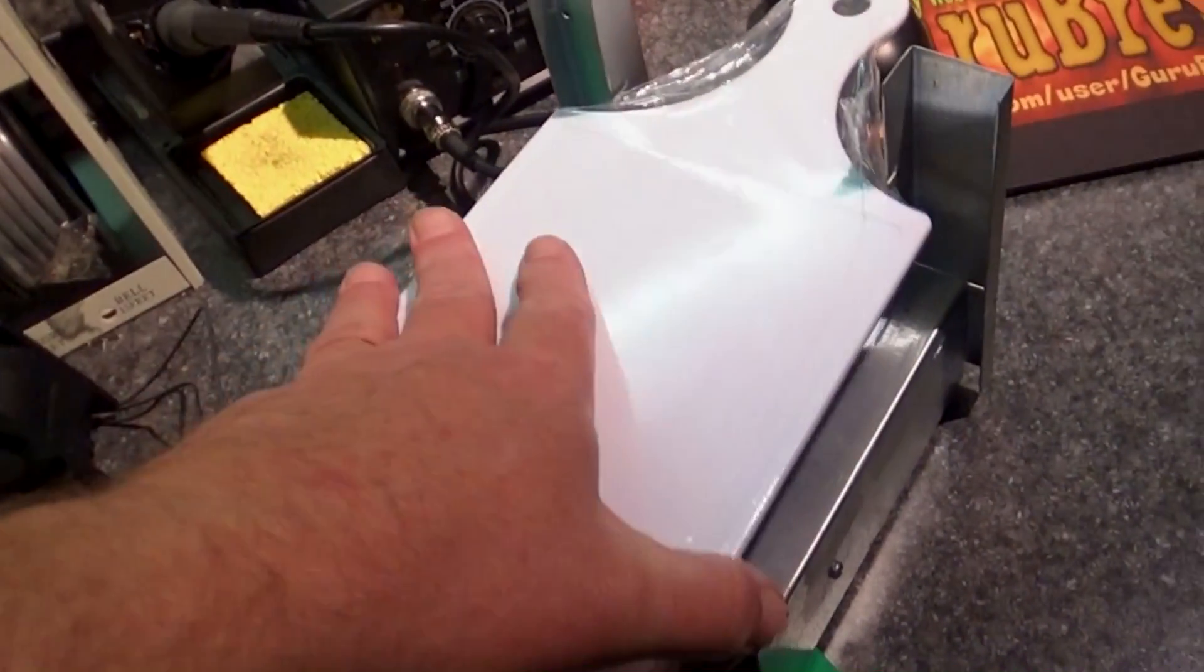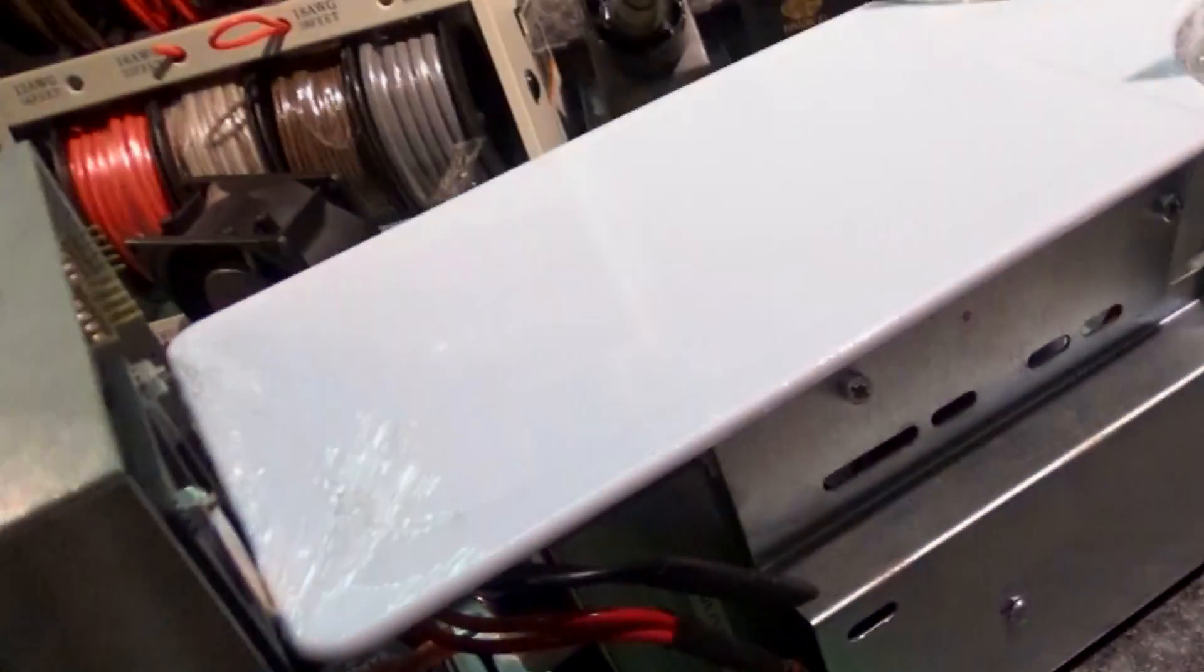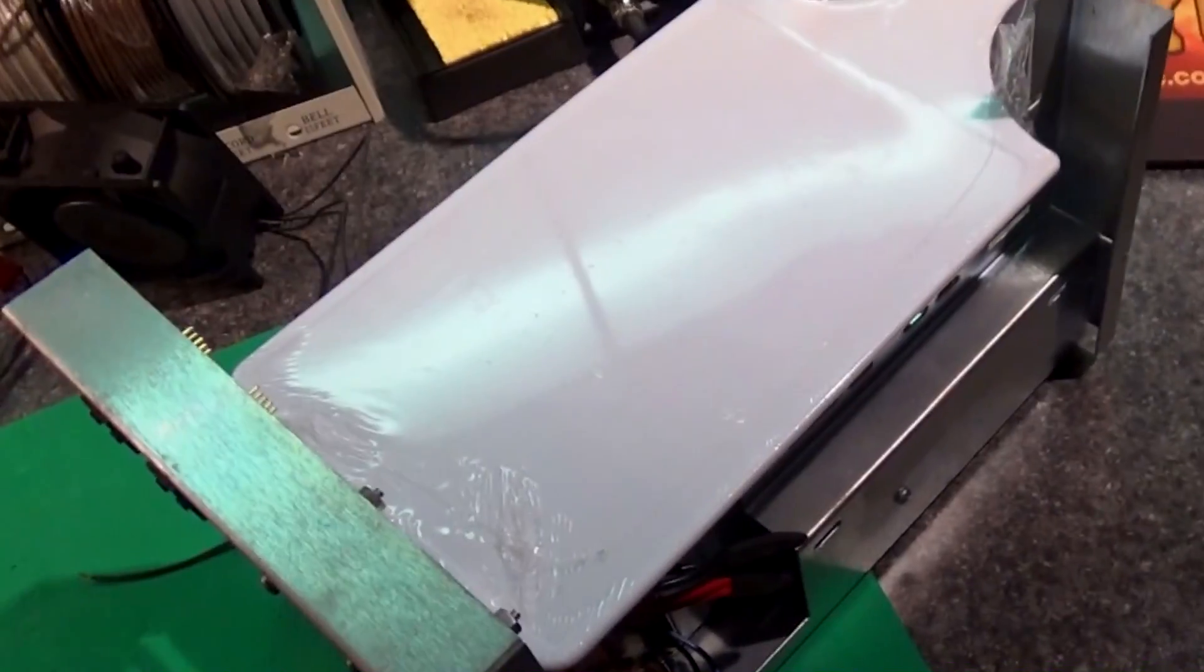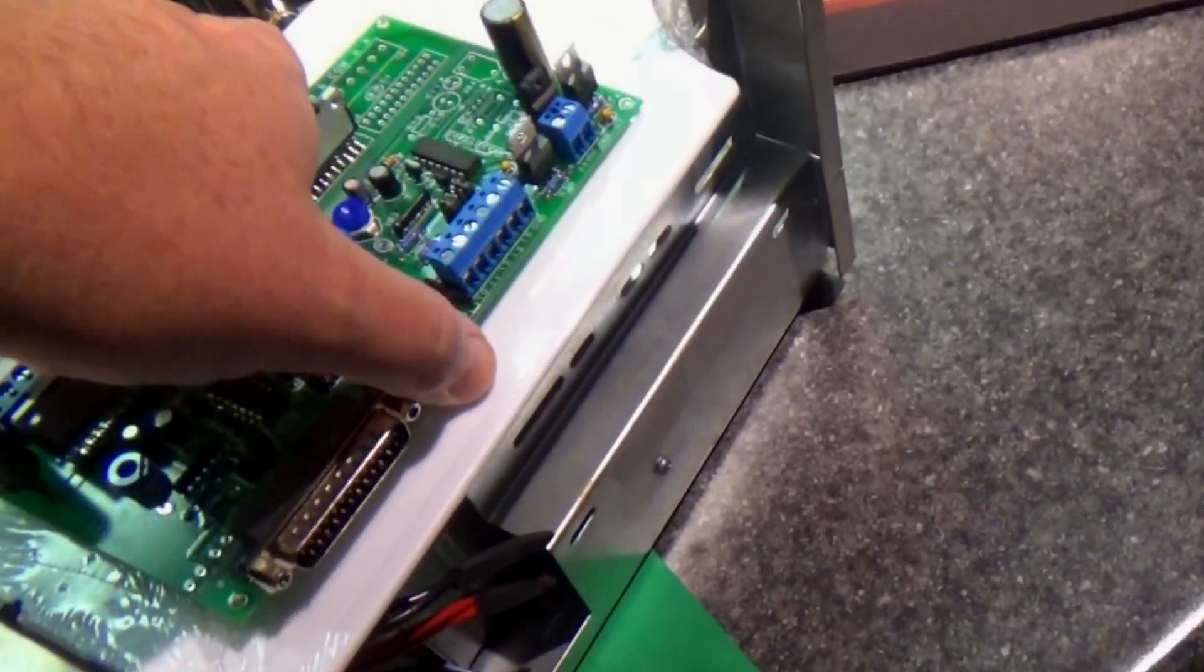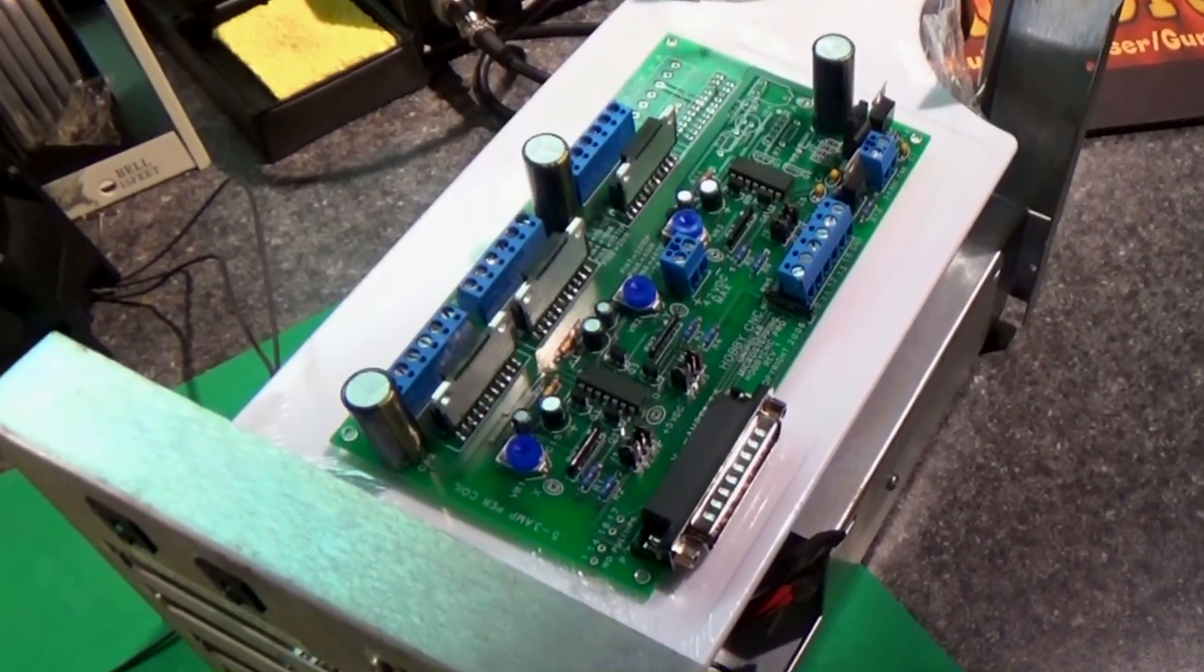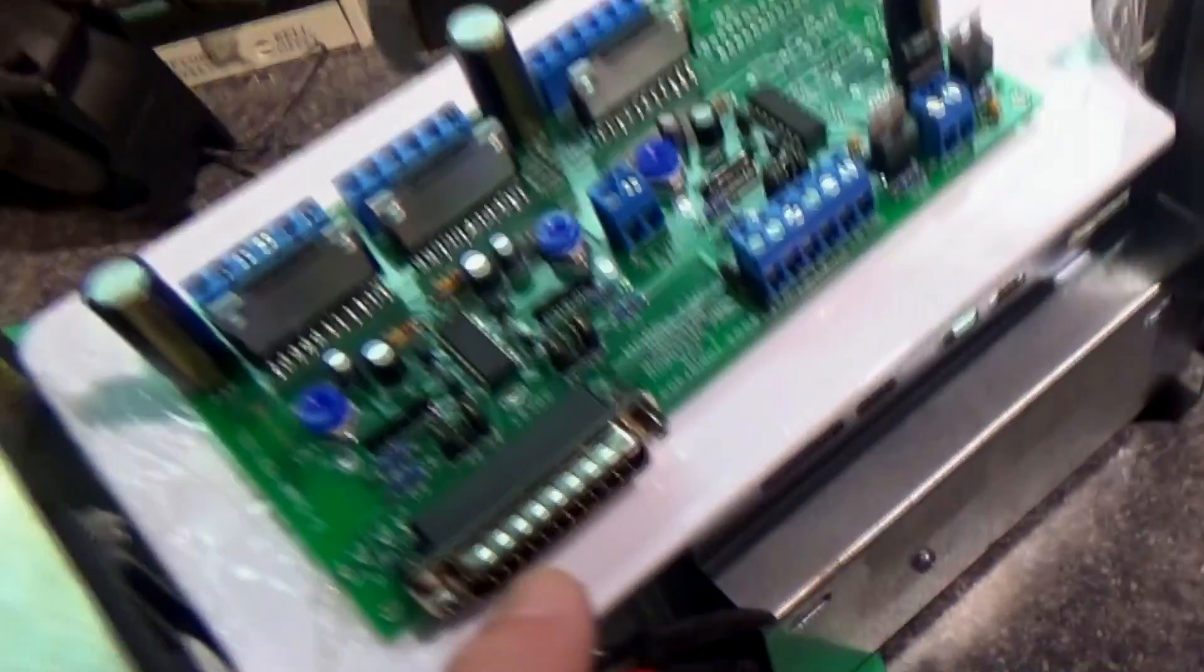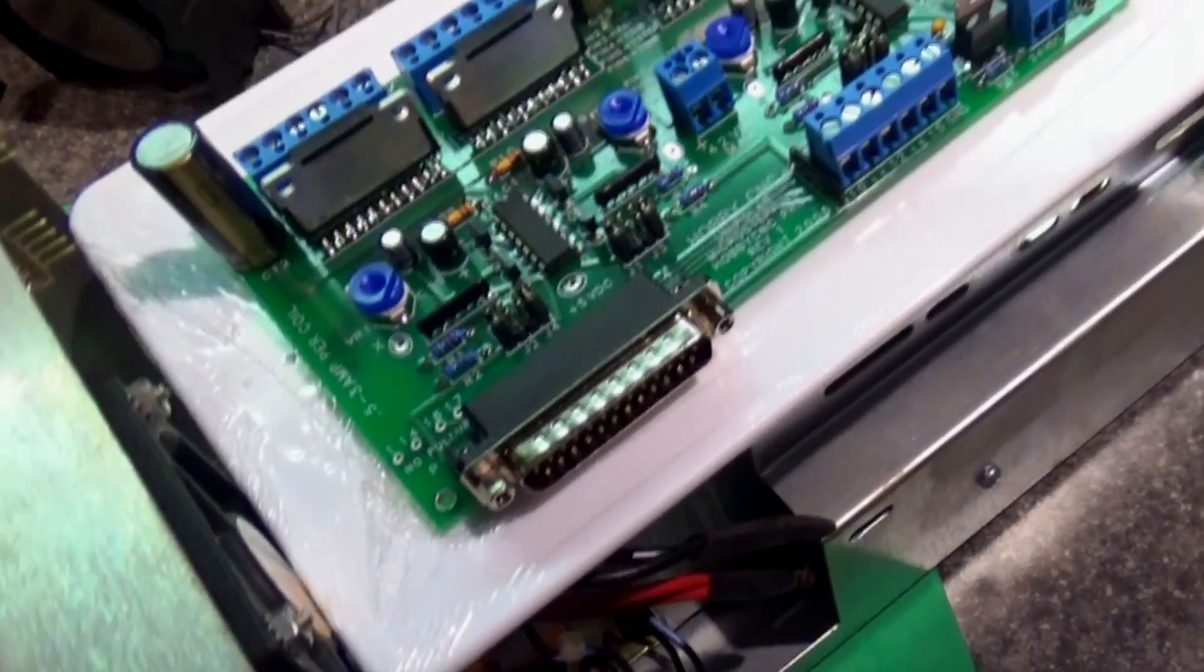So I picked this cutting board up at the dollar store and it'll work great. I'm going to be mounting my board on top of it like that with standoffs, and the problem is this board has the parallel port right there as you can see, coming out the side.